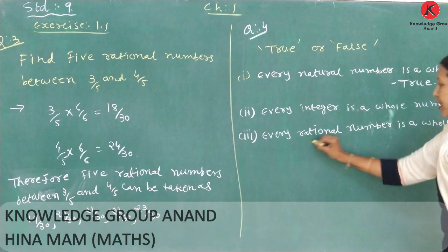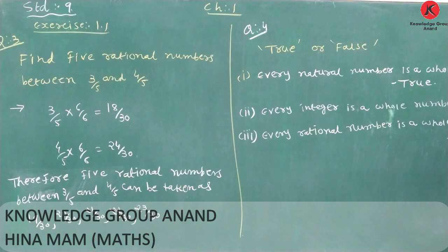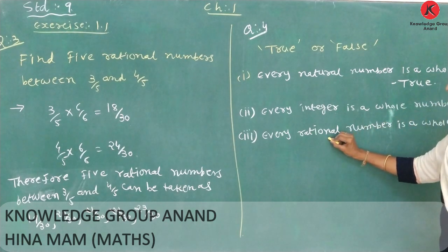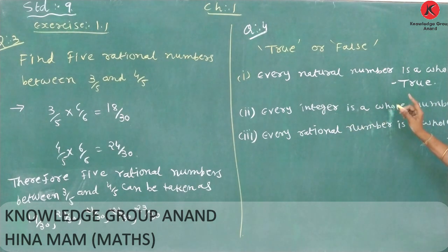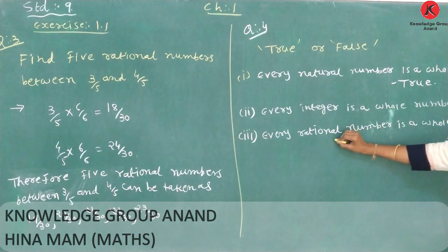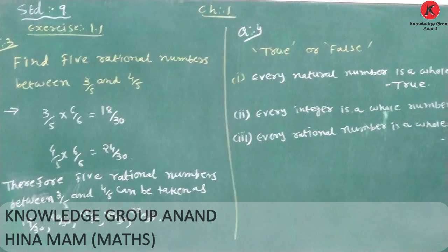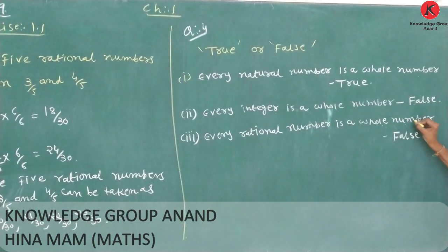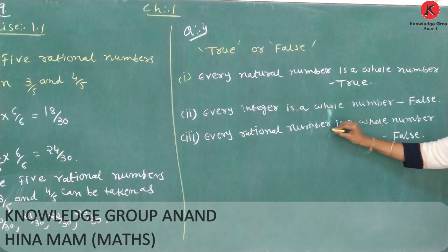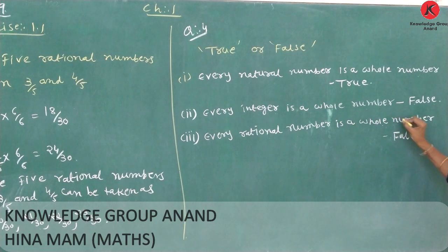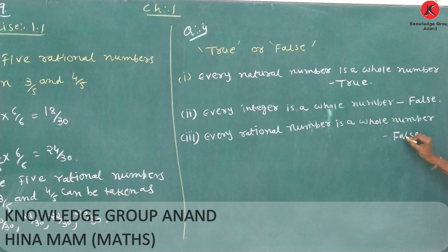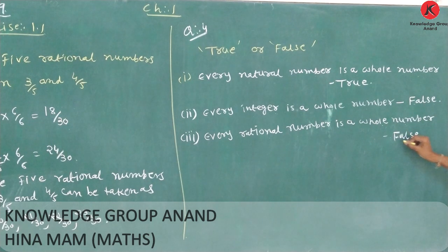Every integer is a whole number — this is false. Also, every rational number is a whole number is false, because a rational number like 5 by 7 is not a whole number. Whole numbers are 0, 1, 2, 3, 4 — but 5 by 7 is not a whole number.